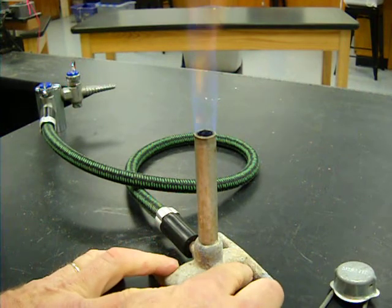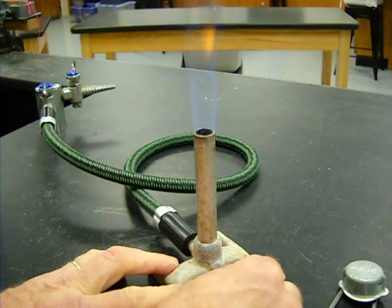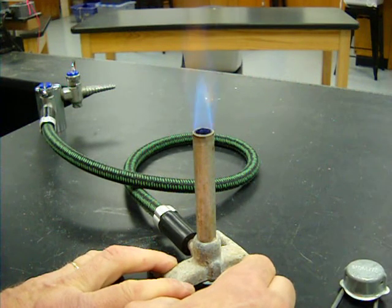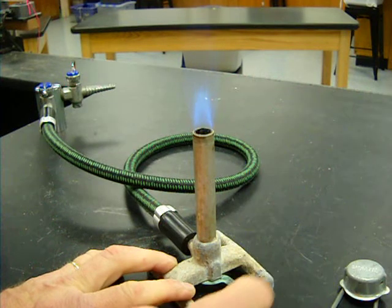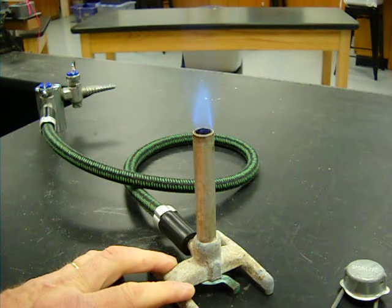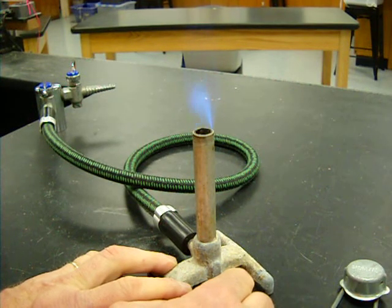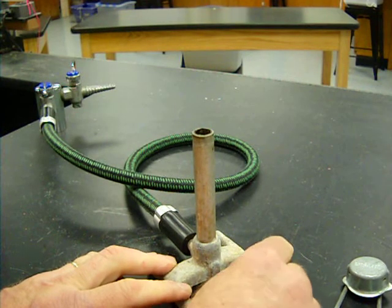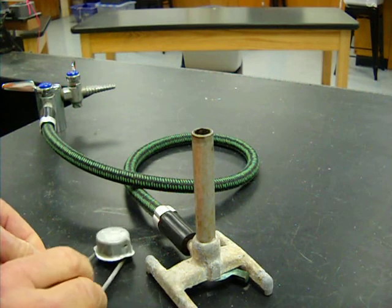I'm going to add a little bit of air by opening up the valve at the bottom. Please make sure you know which way to open and which way to close. As I add more air, you can hear it become more turbulent. In fact, if I keep just adding air, the flame will go out. It will blow itself out. Let me shut that off, turn the gas off, get ready to go again.